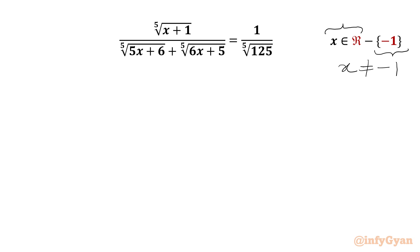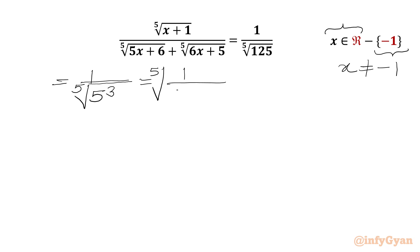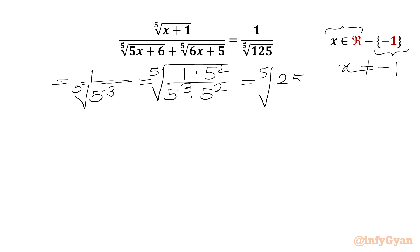Now I will begin with the RHS. This will be equal to 1 over the 5th root of 125 — we can write 125 as 5 cubed. Now this will be equal to the 5th root of 1 over 5 cubed. I will multiply numerator and denominator by 5 squared, which is 25. So in the numerator we can write the 5th root of 25, and the denominator will be 5 to the power 5.